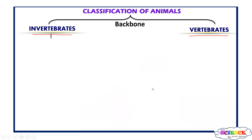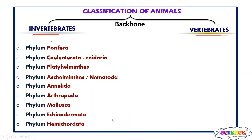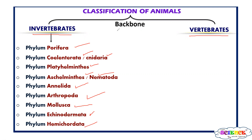Let us classify invertebrates into phyla. Invertebrates are classified into nine phyla: phylum Porifera, Coelenterata (also called Cnidaria), third phylum Platyhelminthes, fourth Aschelminthes (also called Nematoda), fifth phylum Annelida, sixth Arthropoda, seventh Mollusca, eighth Echinodermata, and ninth Hemichordata. These are the nine phyla of invertebrates.